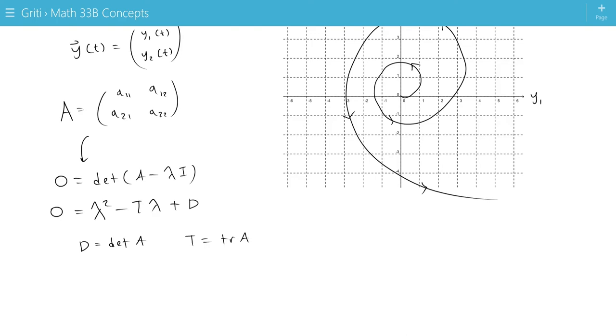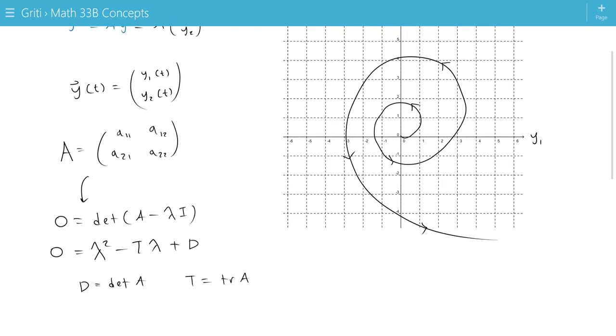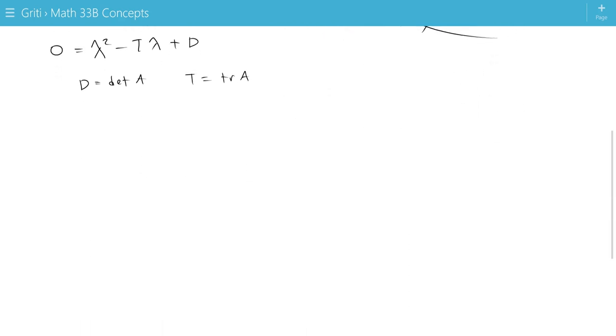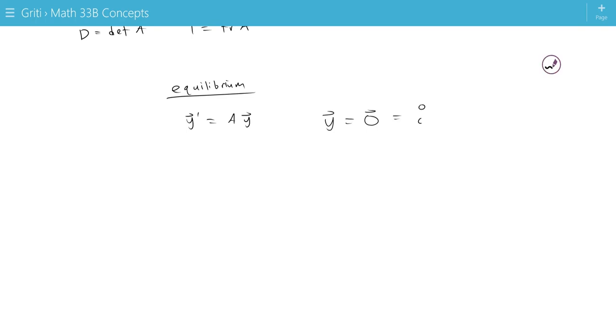We have a few cases of phase plane portraits for the different types of solutions of the equation based on what the matrix is. But all of these involve the concept of equilibrium. Since this is an autonomous equation, we can see that we have equilibrium points. Usually, this equilibrium is going to be the origin, or y equals the 0 vector (0, 0).